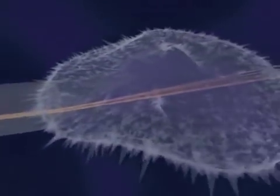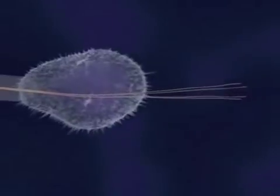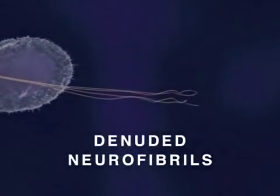Ultimately, both the developing neurite and its growth cone collapse, and some denuded neurofibrils form aggregates or tangles, as depicted here.